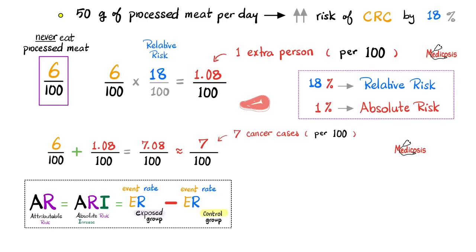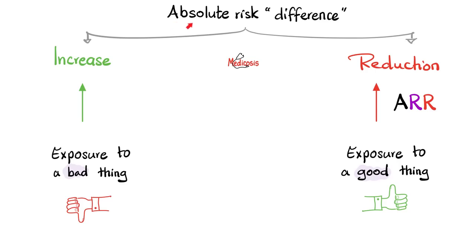Whereas 18% is the relative risk, the absolute risk is only 1%. So with absolute risk difference, we can have absolute risk increase if you're being exposed to a bad thing, such as processed meat, cigarette smoking, asbestos, lead poisoning, arsenic poisoning, etc.